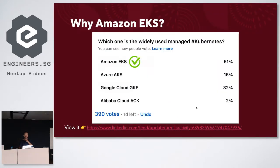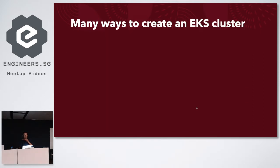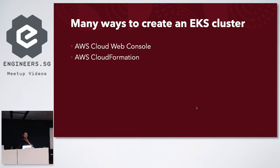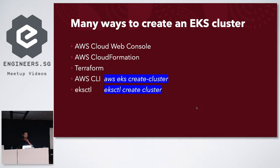I also did my own survey via a LinkedIn post — 51% chose Amazon EKS, definitely a clear leader. How to create the EKS cluster? There are many ways: Amazon Web Console, CloudFormation, Terraform, AWS CLI, eksctl, or KOPS — literally dozens of different tools. But none of them, like the automation I created, just run one command and does everything for you.